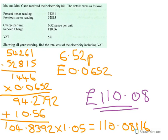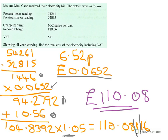Here's the answer to this one. Do the subtraction — you've got 1,446 units used. Multiply by the price per unit, but it's been changed to pounds. This gives you the cost; add the service charge. Multiply by 1.05 to add 5%, then make sure you round to two decimal places. Make sure your final answer is obvious and show as much working out as possible — there are a lot of marks for method.